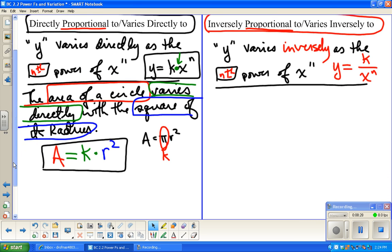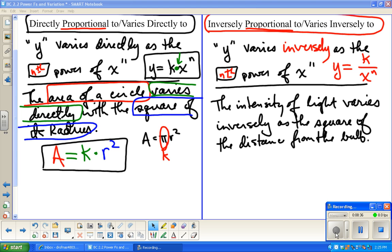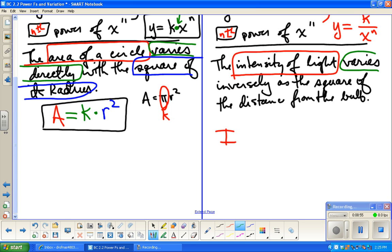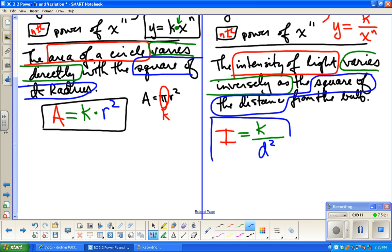So a quick example of this might be, the intensity of light varies inversely with the square of the distance from the bulb. So, I'm going to use variables that kind of go along with what's being talked about. So, intensity of light, the intensity of light varies inversely as, so equals k divided by the square of the distance from the bulb. So it follows the same exact pattern, only if the word inversely is in there, we do division instead of multiplication.